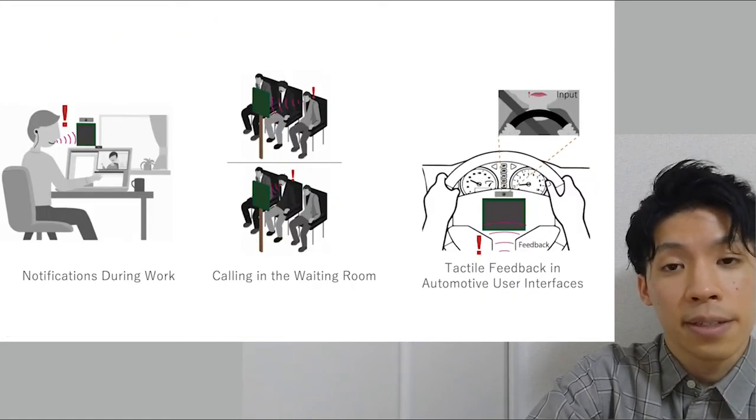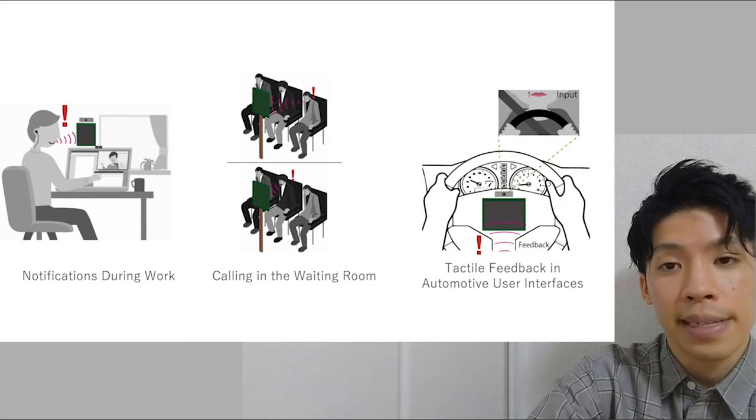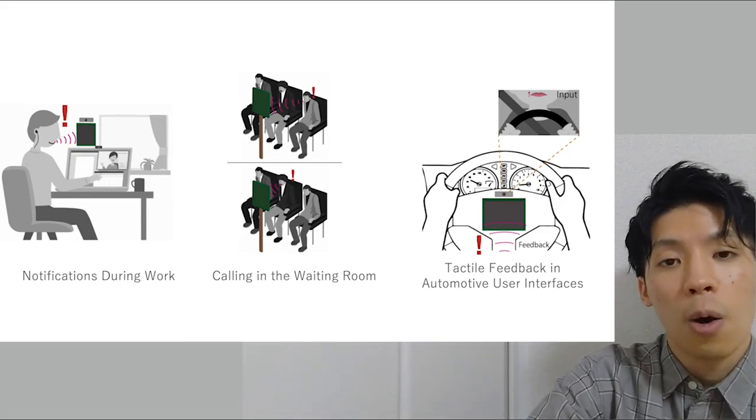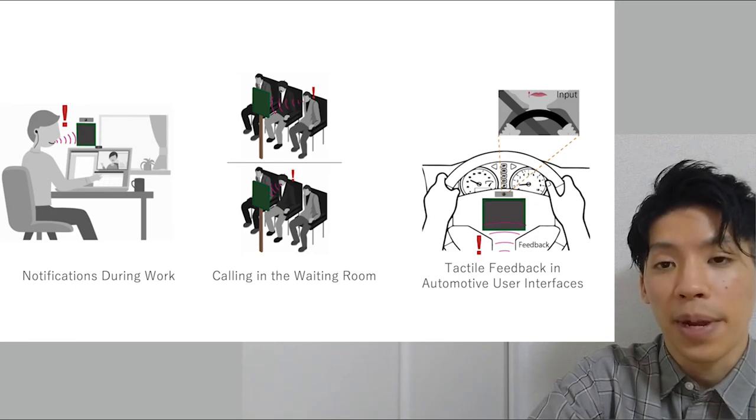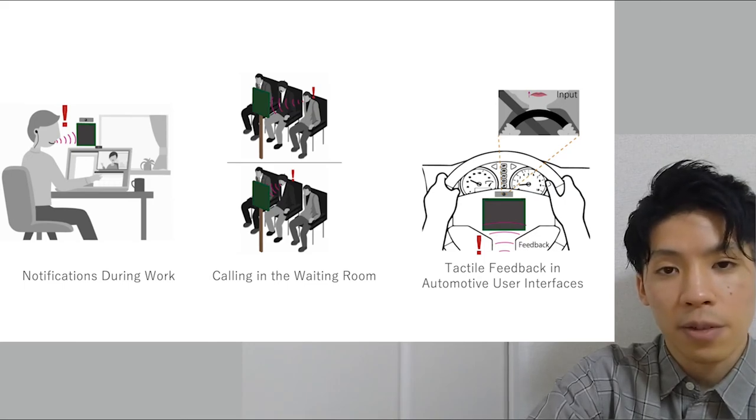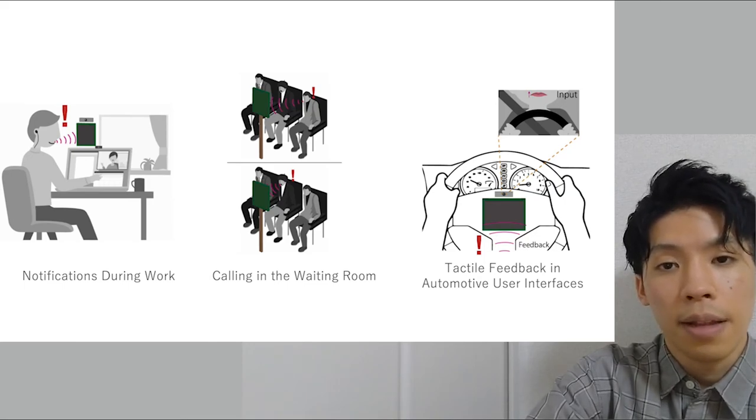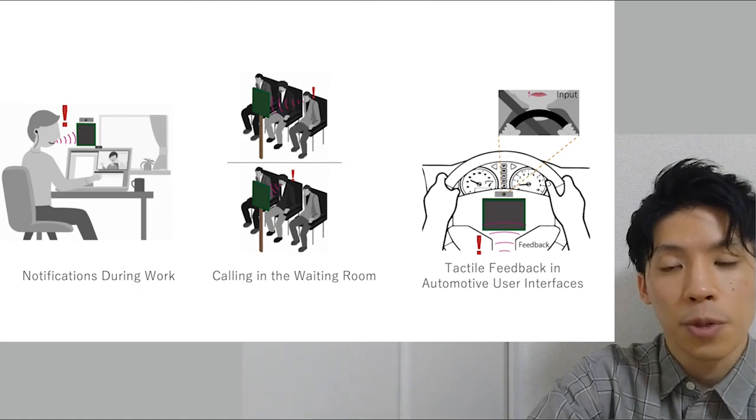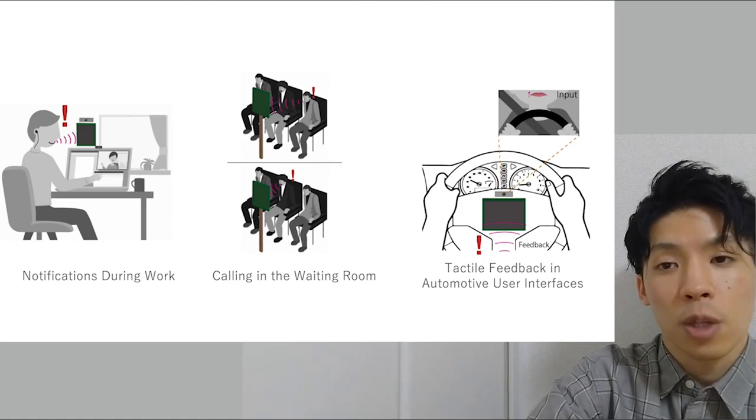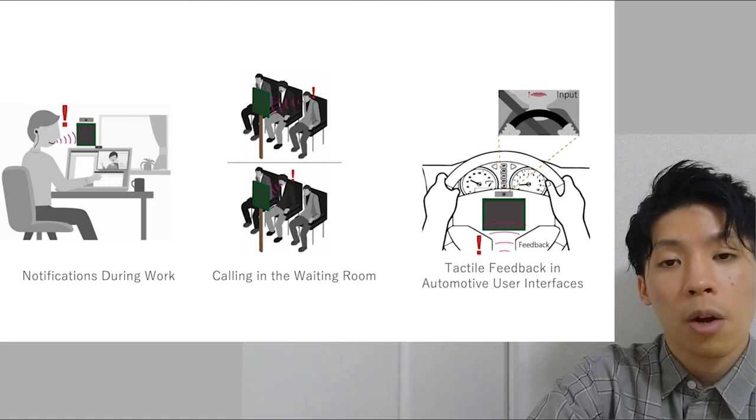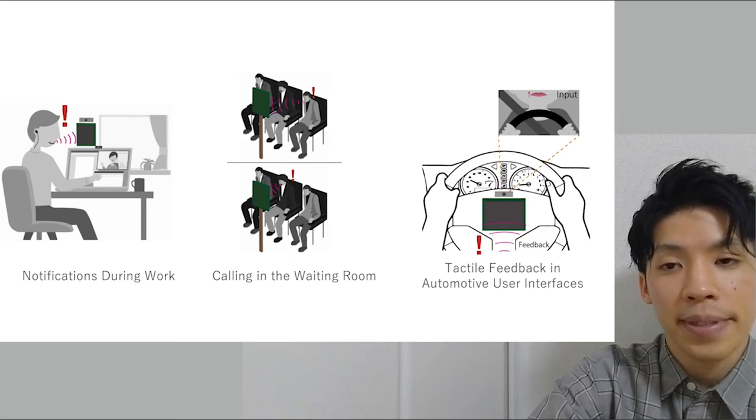Lipnotif allows the user to receive information using only lips without sight, hearing, or hands. Also, it doesn't require users to wear or bring anything in advance. By combining directional and emotional cues, Lipnotif can open new and useful interactions, such as notifications during work, calling in the waiting room, and tactile feedback in automotive user interfaces.